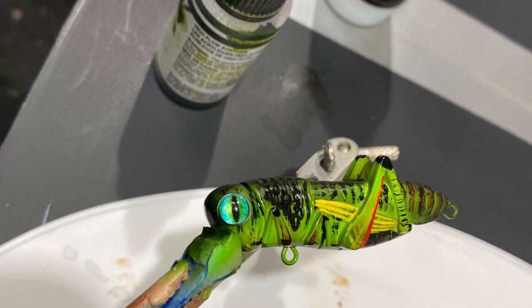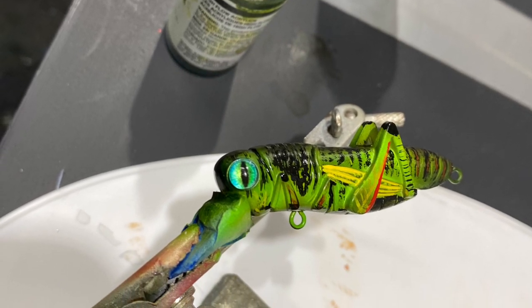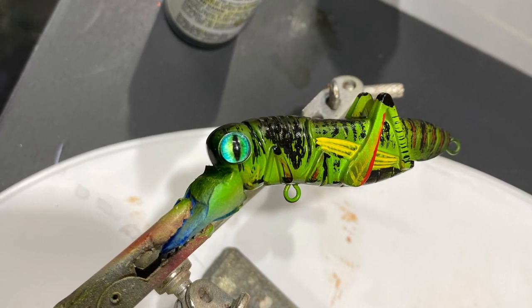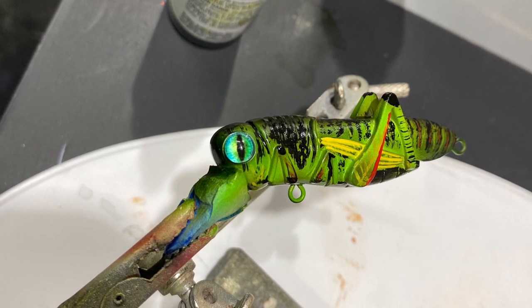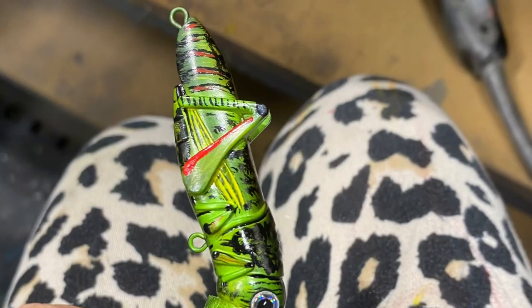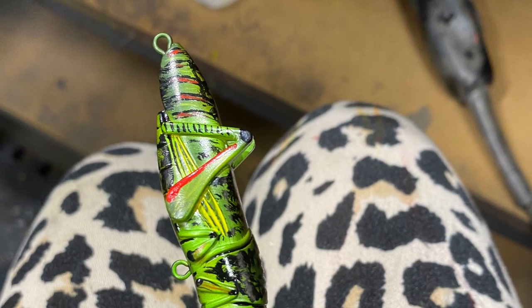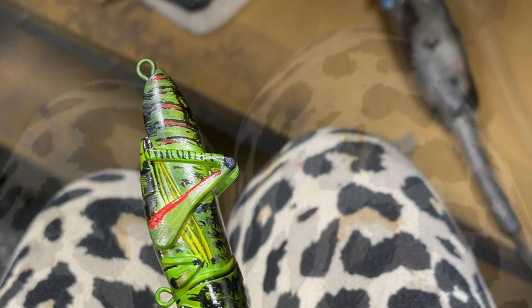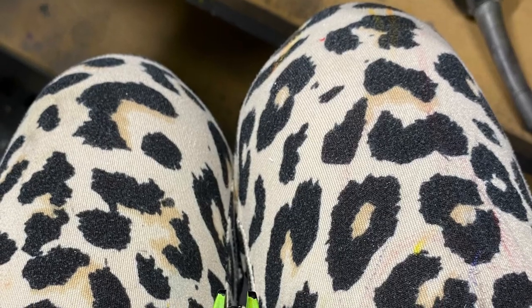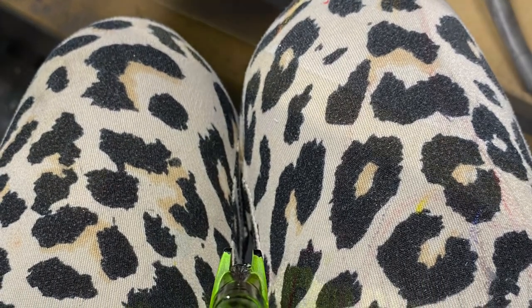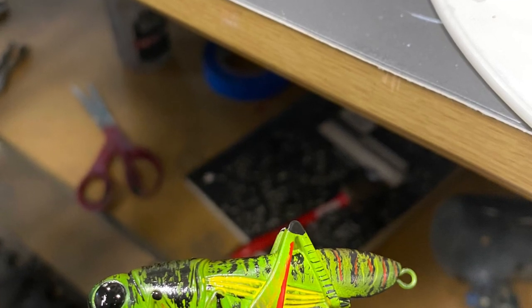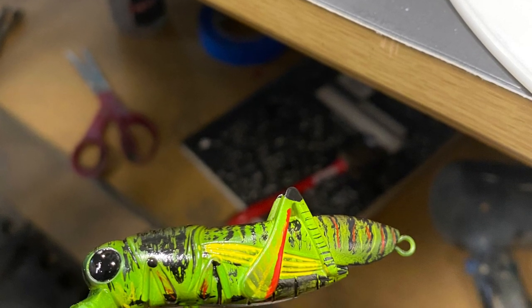I added some yellow to the wings as well. I really wanted to use this eye because it was super cool looking, but I knew my dad would not like that because he likes baits that actually look realistic, so I went with a plain black eyeball. I came back with some red in the wings and a little bit of yellow.